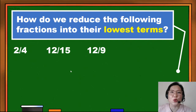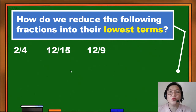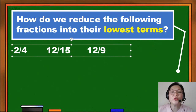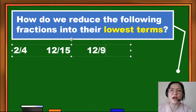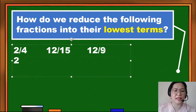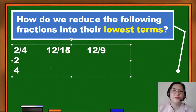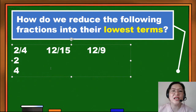Another thing that you have to know before we proceed to addition of similar fractions is how to reduce fractions into their lowest terms. I have here examples. The question is, how do we reduce the following fractions into their lowest terms? In order to reduce fractions to lowest terms, you have to find the number that you can use to divide the numerator and the denominator. Let us take 2/4 as an example. In order to get that number, you are going to look for what we call GCF.